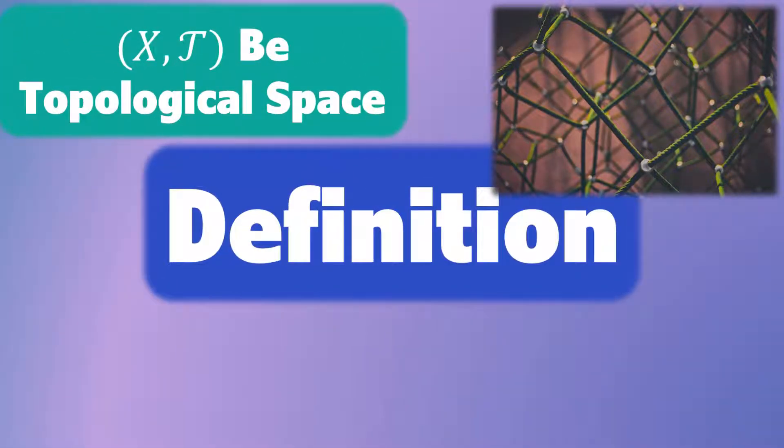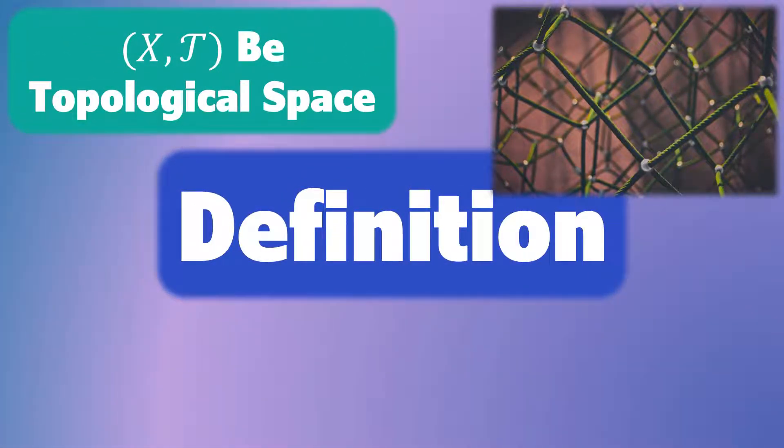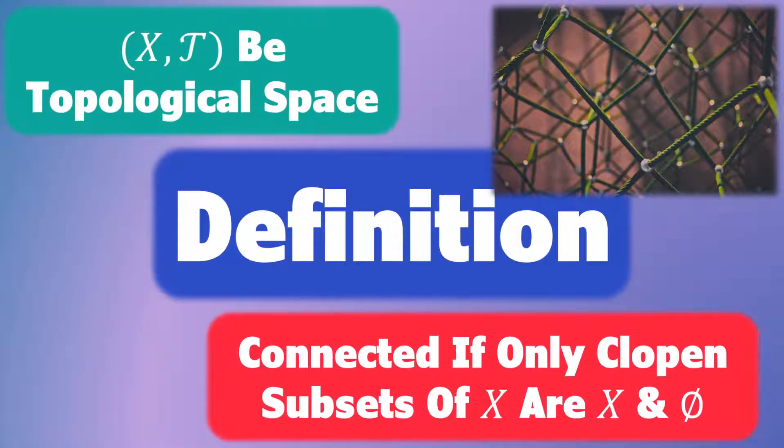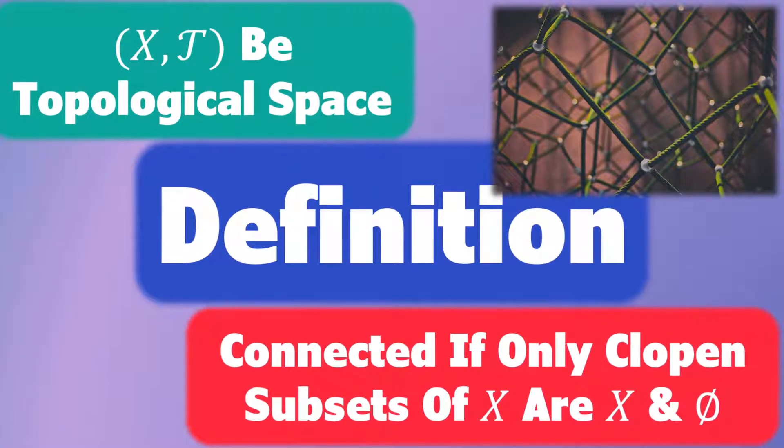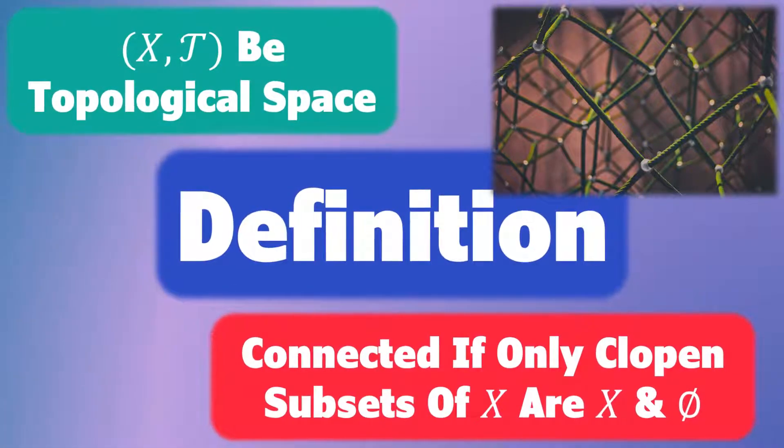Let X with T be a topological space. Then it is said to be connected if the only clopin subsets of X are X and the empty set.